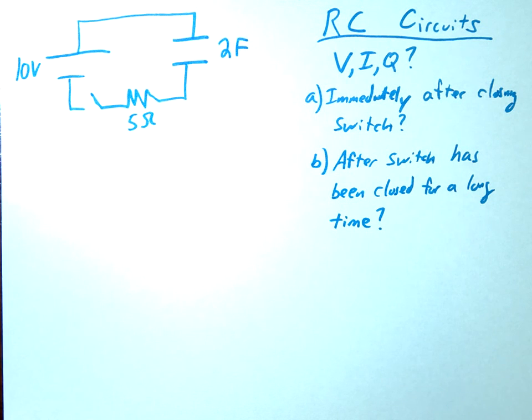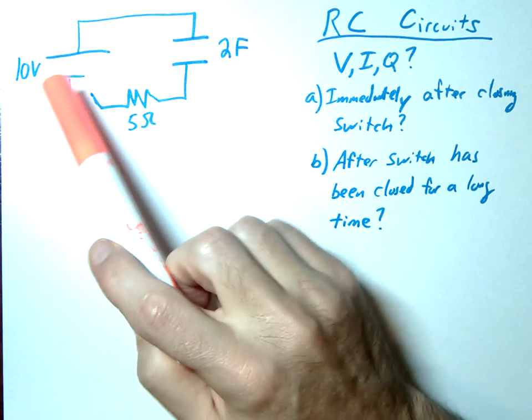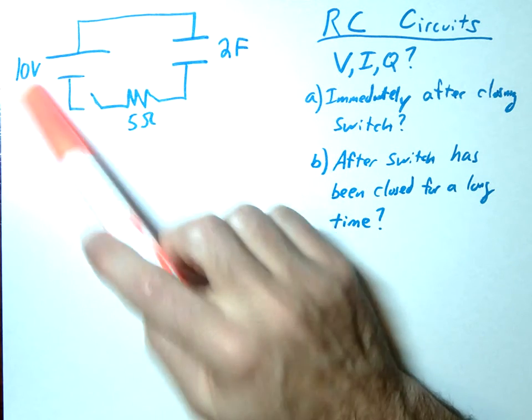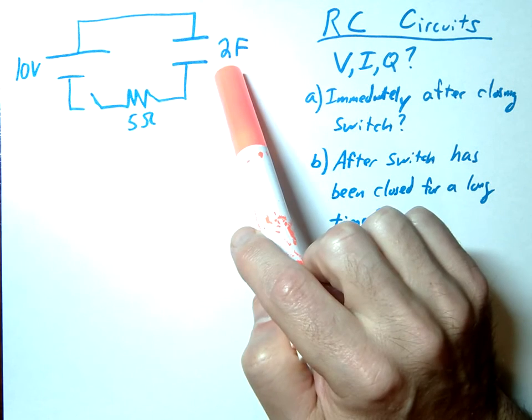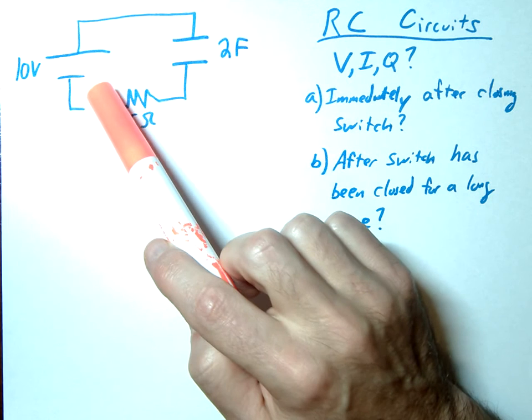So far we've been looking at resistor-only circuits, we've looked at capacitor-only circuits, now we're going to combine these two in what's called an RC circuit. I have a simple circuit here, this is my battery, 10 volts, here's my 5 ohm resistor, and here's my 2 farad capacitor, and I have my switch right here.